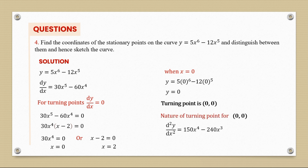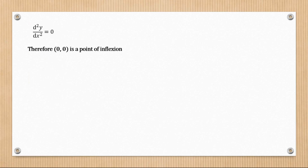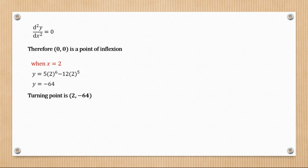Finding the second derivative and substituting x = 0 gives 0. Since the second derivative equals 0, this is a point of inflection. When x = 2, y = -64, so the turning point is (2, -64).